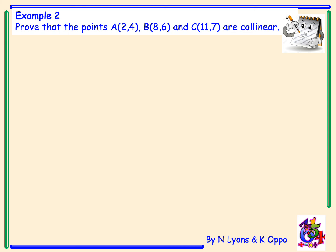Example 2. Prove that the points A(2, 4), B(8, 6), and C(11, 7) are collinear. By using vectors, we will first look at vector AB.